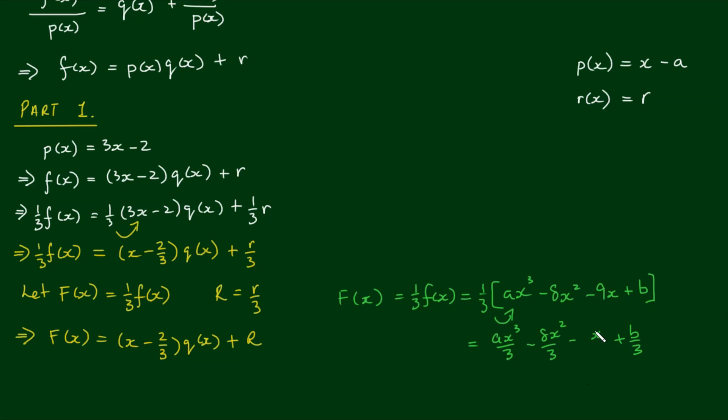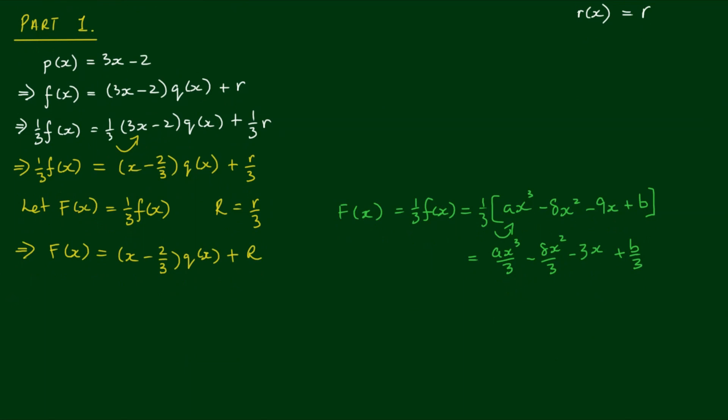So we can tackle this problem now because by the polynomial remainder theorem, r is simply equal to f evaluated at x equals a. So remember how we had the form p(x) is equal to x minus a. Well simply, if we let x equals a, p(a) is equal to a minus a, which equals 0. So in this case, a is equal to 2 thirds. And if we put 2 thirds here, we get 2 thirds minus 2 thirds, which equals 0. The first term actually goes to 0, and that's how r is always equal to f evaluated at x equals a.